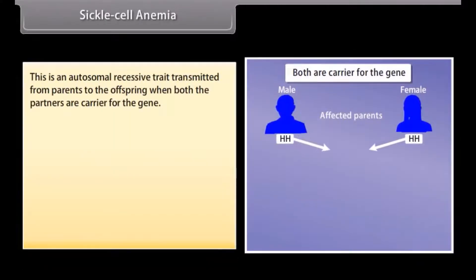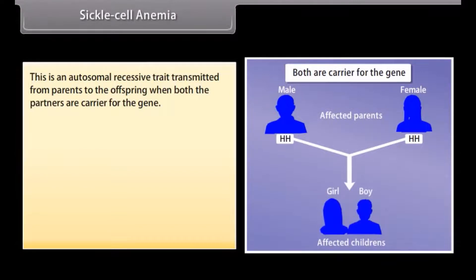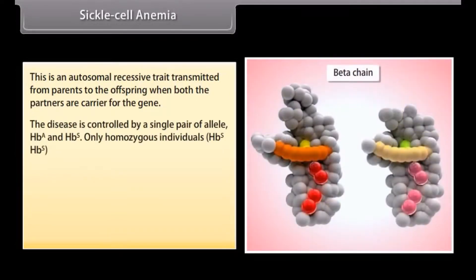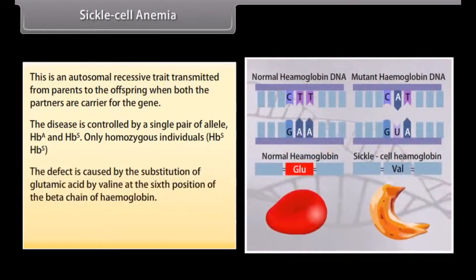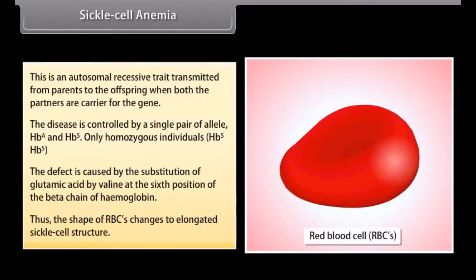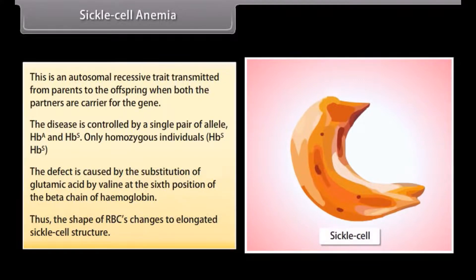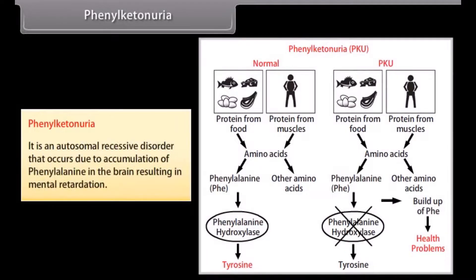Sickle cell anemia is an autosomal recessive trait transmitted from parents to offspring when both partners are carriers. The disease is controlled by a single pair of alleles HbA and HbS; only homozygous individuals (HbSHbS) are affected. The defect is caused by substitution of glutamic acid by valine at the sixth position of the beta chain of hemoglobin, changing the shape of RBCs to an elongated sickle cell structure. Phenylketonuria is an autosomal recessive disorder that occurs due to accumulation of phenylalanine in the brain, resulting in mental retardation.